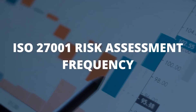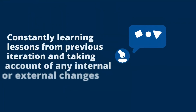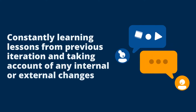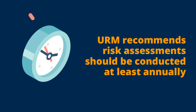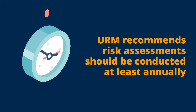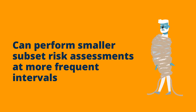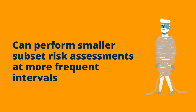Risk management and therefore risk assessment is an iterative process, and each iteration should take into consideration lessons learned from the previous iteration and any internal or external changes, thus enabling continual improvement. There is no hard and fast rule on the frequency of risk assessment, but URM recommends that the frequency is no less than annual. This does not necessarily mean setting aside a fixed time each year — it just means that each time 12 months has elapsed you should aim to have completed the next iteration. You could spread the workload over the 12-month period by performing smaller risk assessments on a subset of areas at more frequent intervals if this is more manageable.